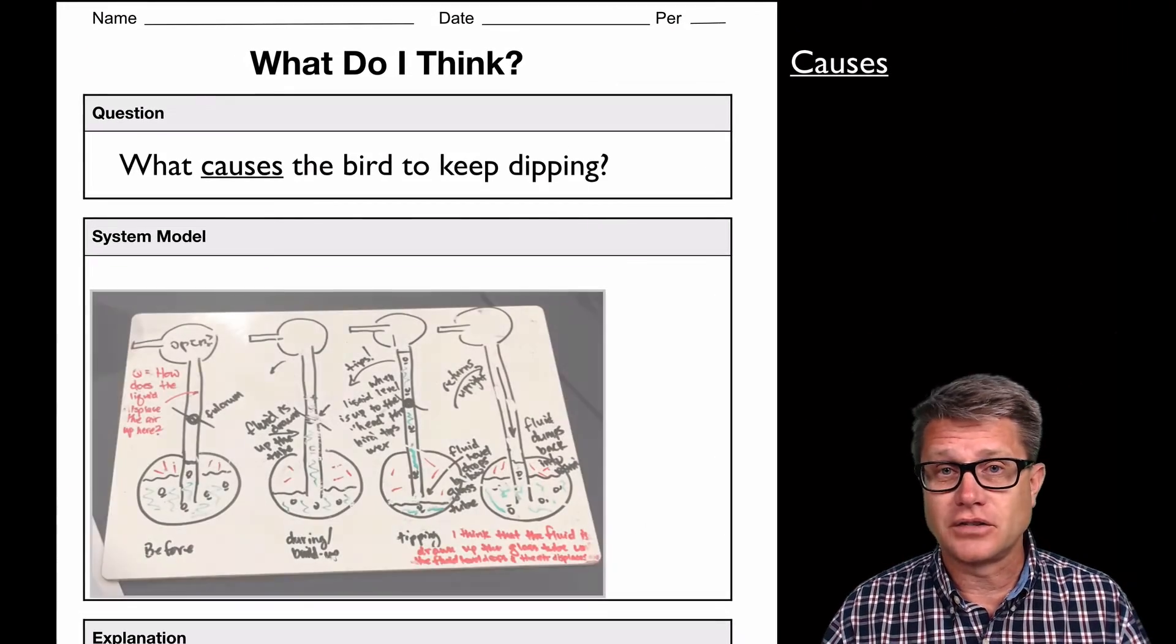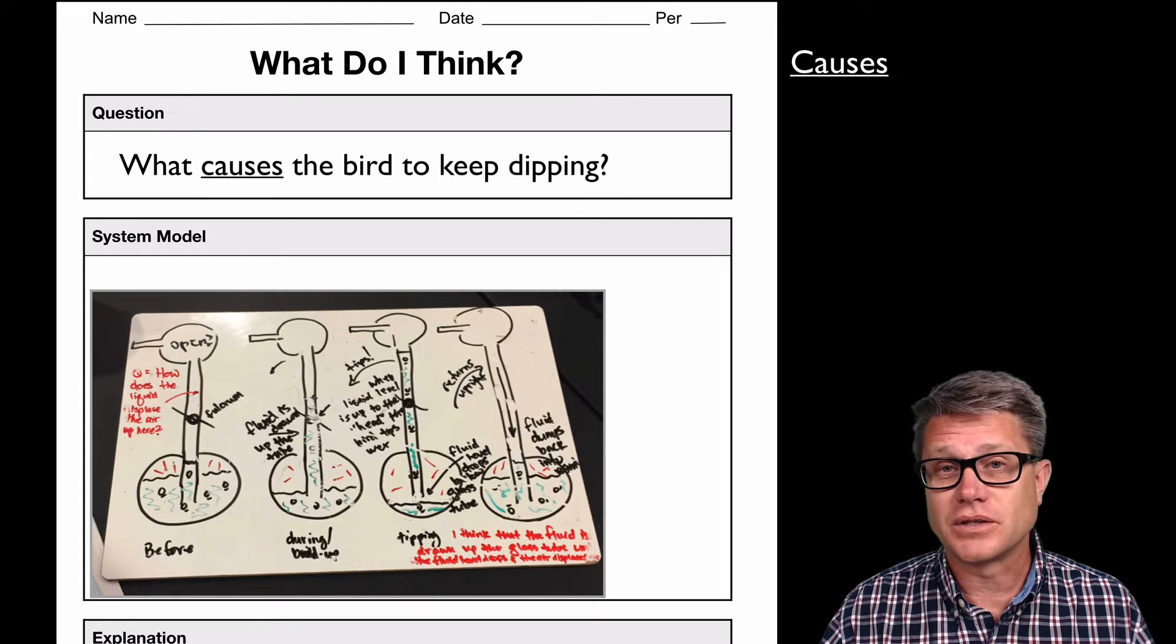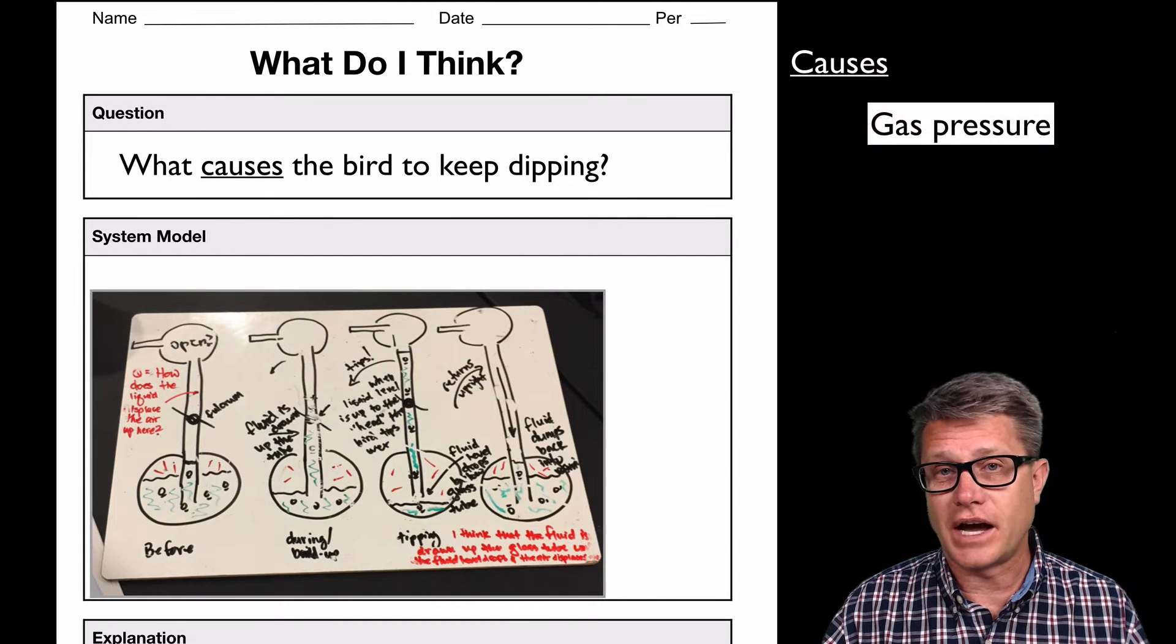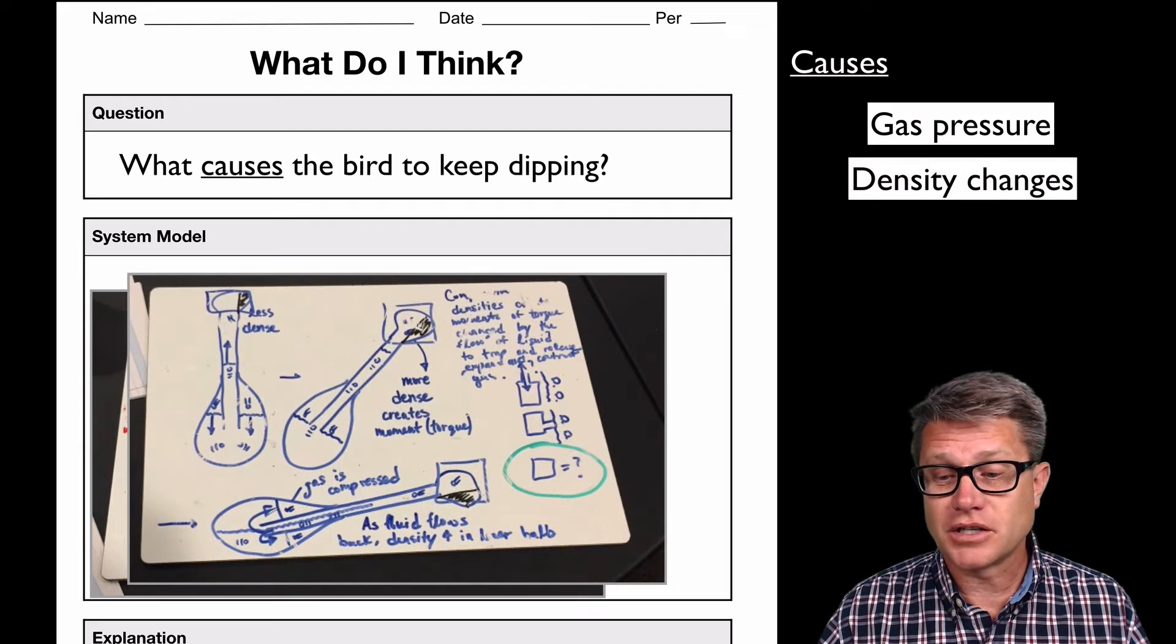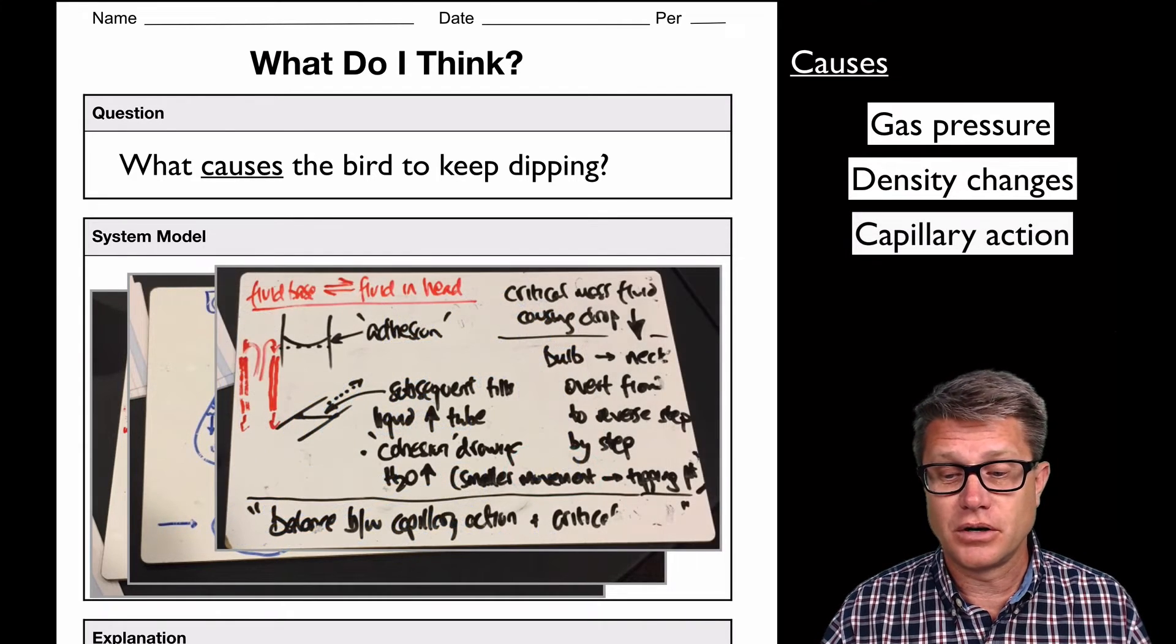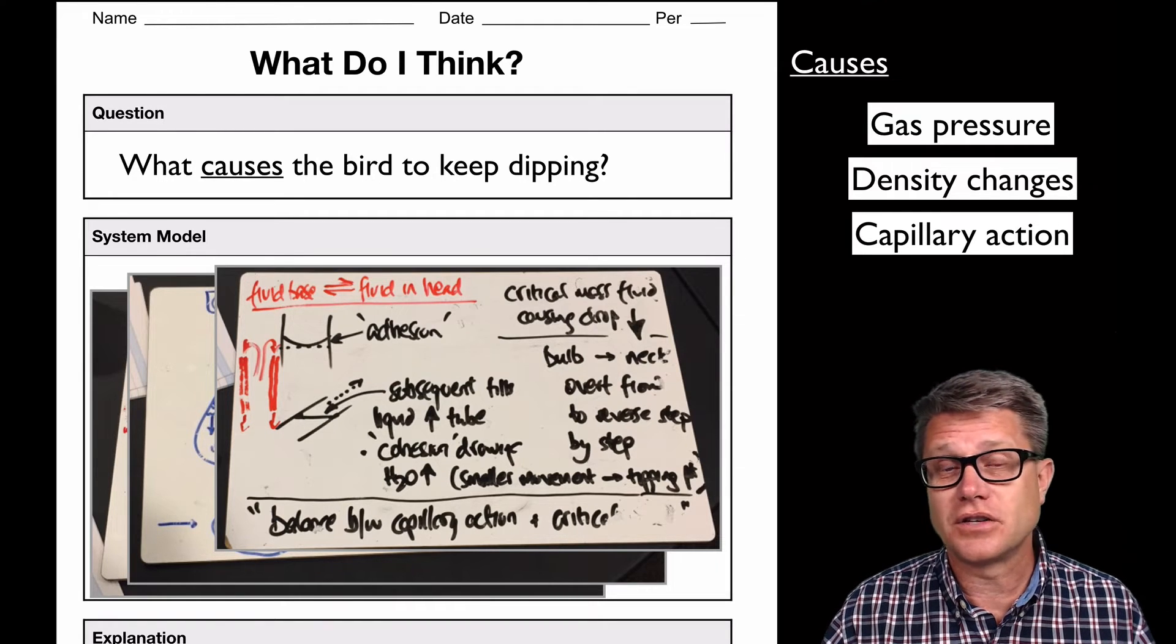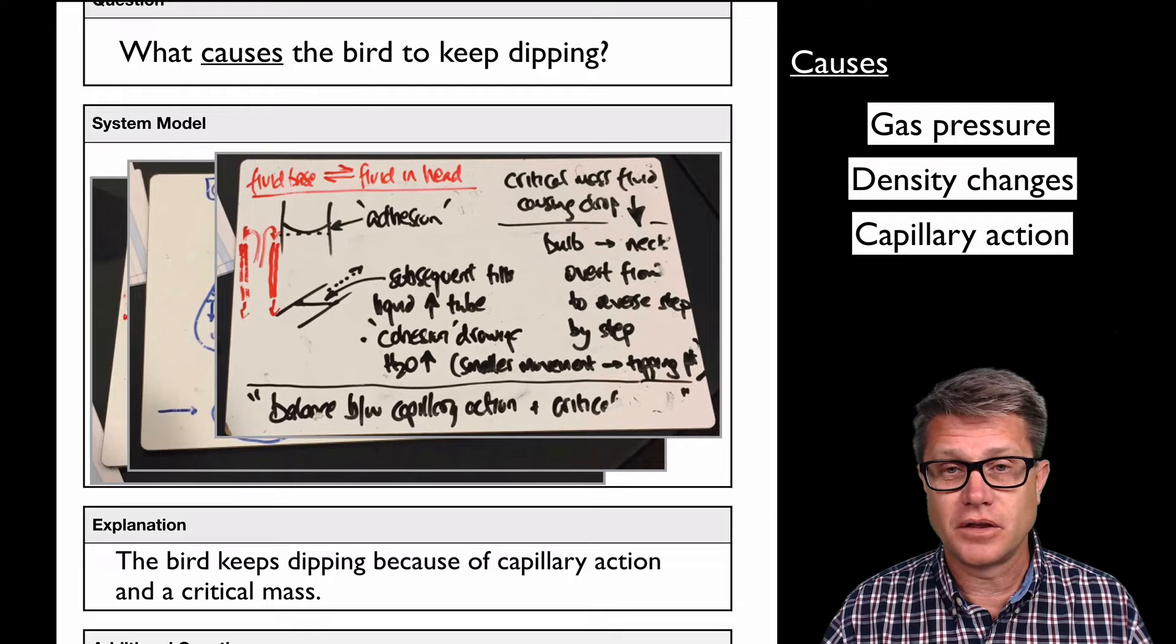This is an example of what that might look like. This student believes that what's causing those birds to dip is gas pressure. Or this would be another explanatory model. Maybe they believe it has to do with density changes within the bird. Or capillary action is a very common kind of system model when we're looking at an explanation for the bird.